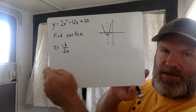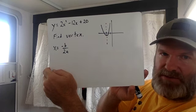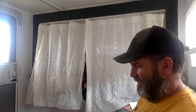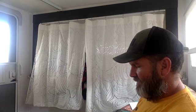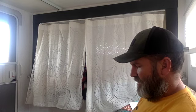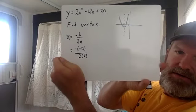So if we use this example that I gave you here, 2x² - 12x + 20, you would have the negative of b, and b is negative 12, over 2 times a, and a is 2. So it would look like this.